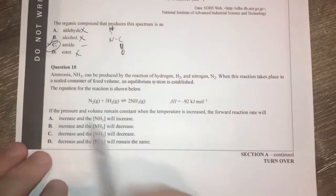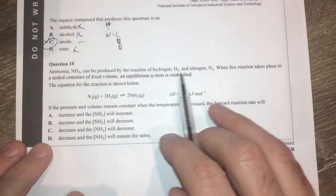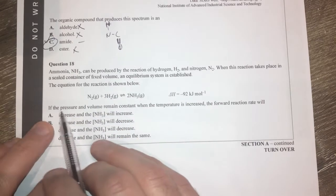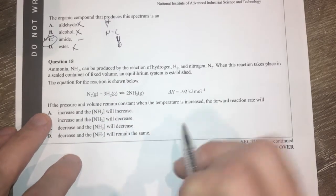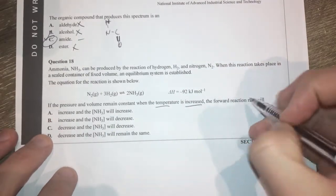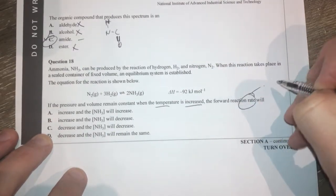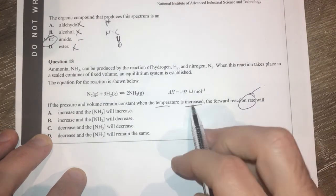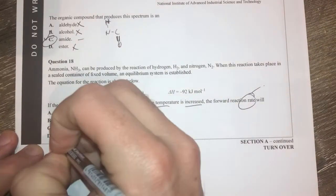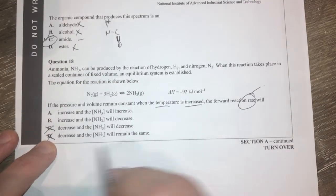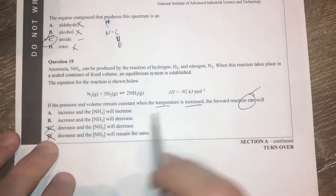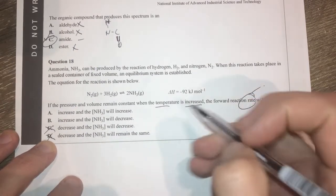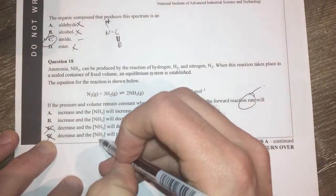Question 18. Ammonia can be produced by hydrogen. We've got an equilibrium reaction here. If pressure and volume remain constant and temperature is increased, the forward rate of reaction is collision theory. So what's going to happen, the forward rate of reaction if you increase temperature is going to increase. So it's definitely not going to be C and D because that means a decrease in your rate of reaction. Let's look at this, the concentration. This is about yield so it's about Le Chatelier so that is Lachat.